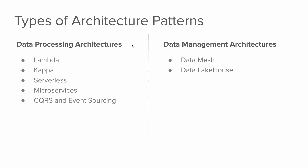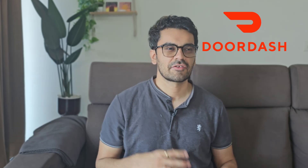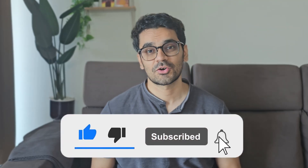These patterns are divided into two categories: data processing architectures, where patterns mainly address how data flows through a system and how events are processed in real time or batch; and data management and domain-oriented architectures, where patterns deal more with how data is modeled, stored, and governed. I'm Josh, a senior software engineer at DoorDash working on generative AI-based data products, and before that I was at Google as a data engineer and then as an AI engineer.